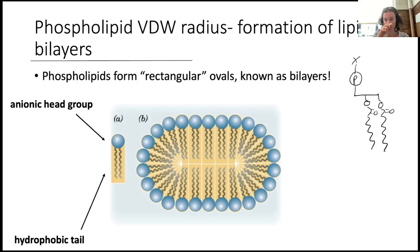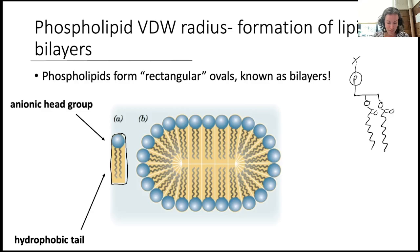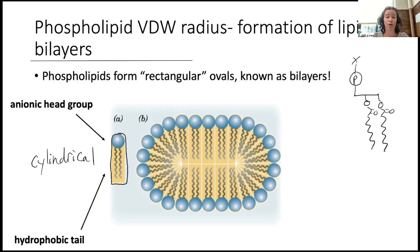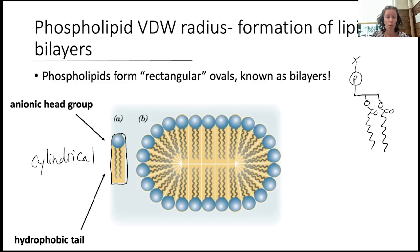Now here at the top we have more of this electron density — we have the big phosphate, the X group — and then we have a little bit less of that electron density down the tails, but now we have two tails. So that expands the van der Waals radius to more of a cylindrical shape rather than conical. As in the previous slide you see how that shape tapers toward the end, but a phospholipid has a more rectangular cylindrical shape.